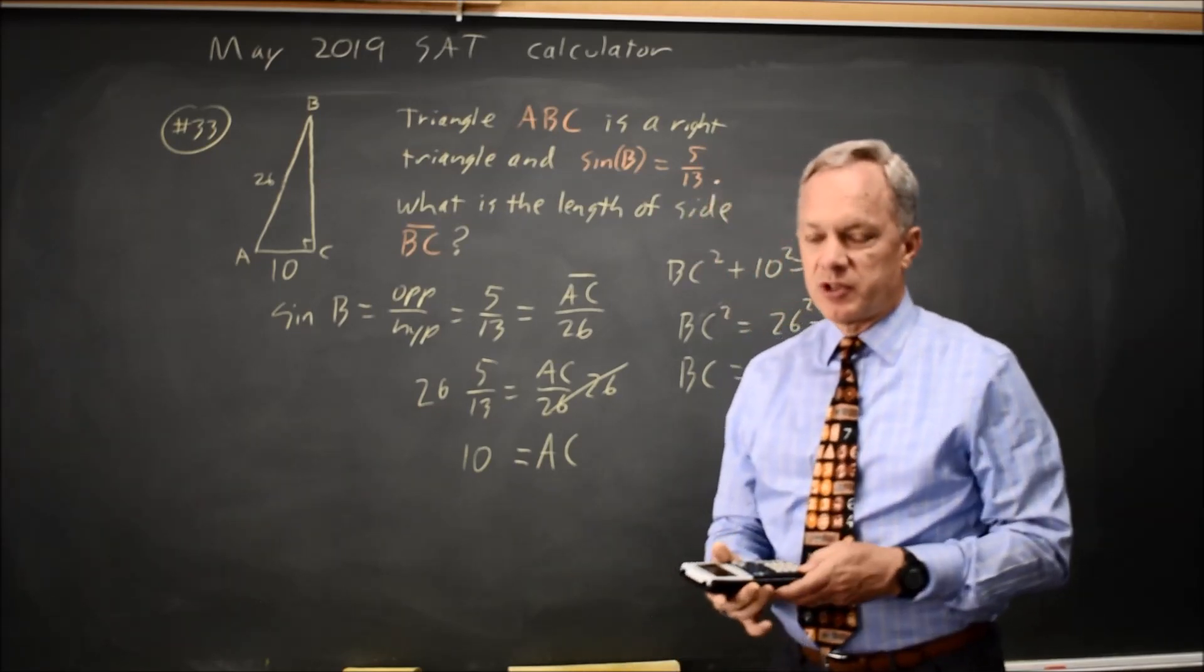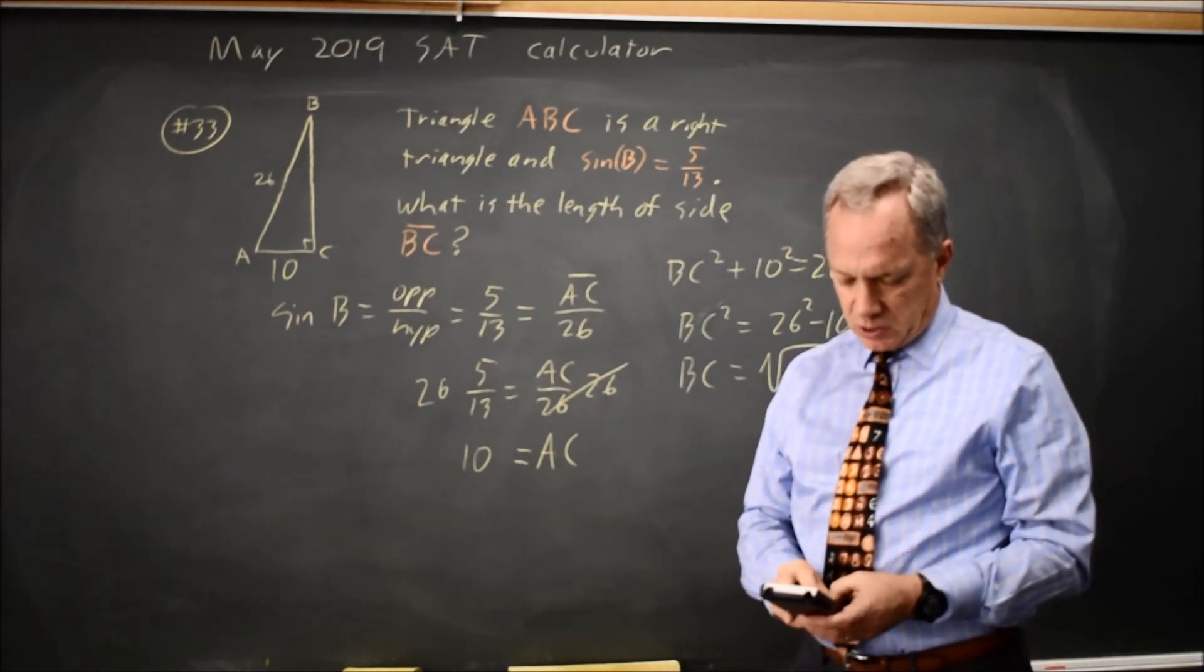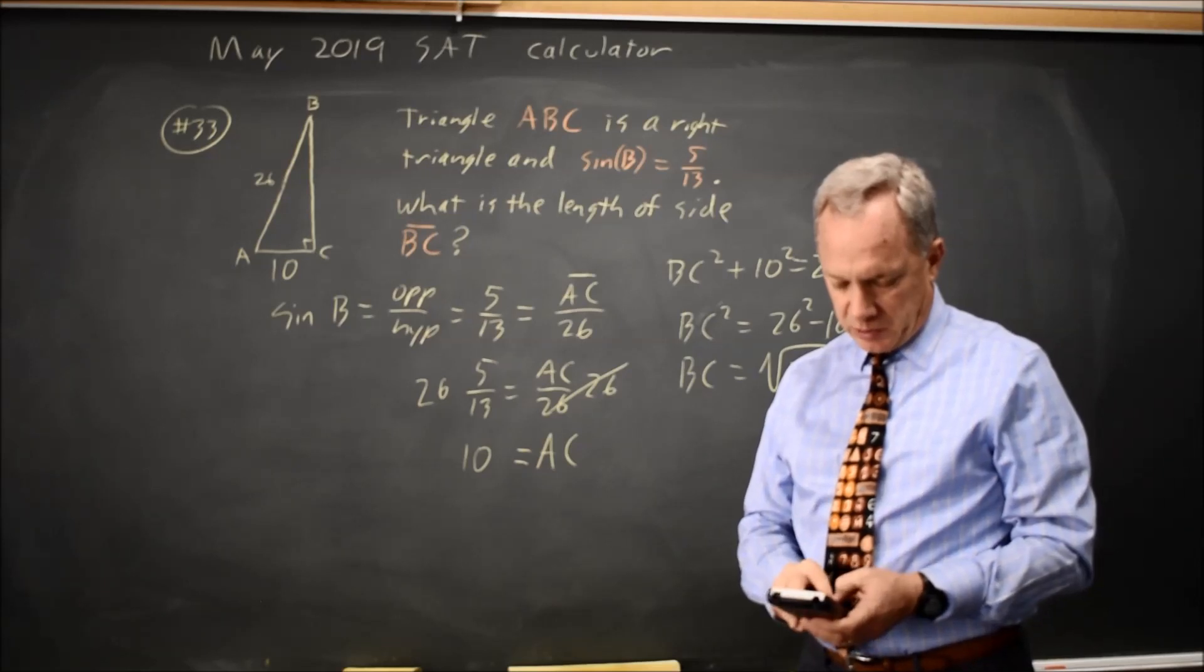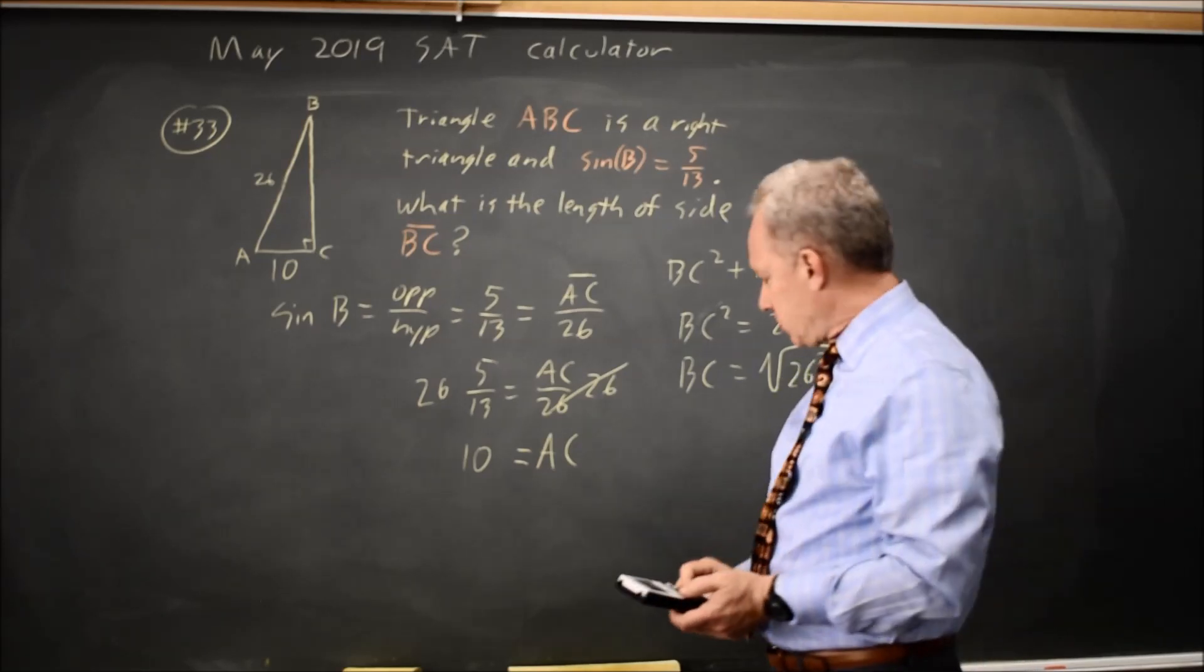And I can ask my graphing calculator, or my scientific calculator, 26 squared minus 10 squared, and the square root of that number is 24.